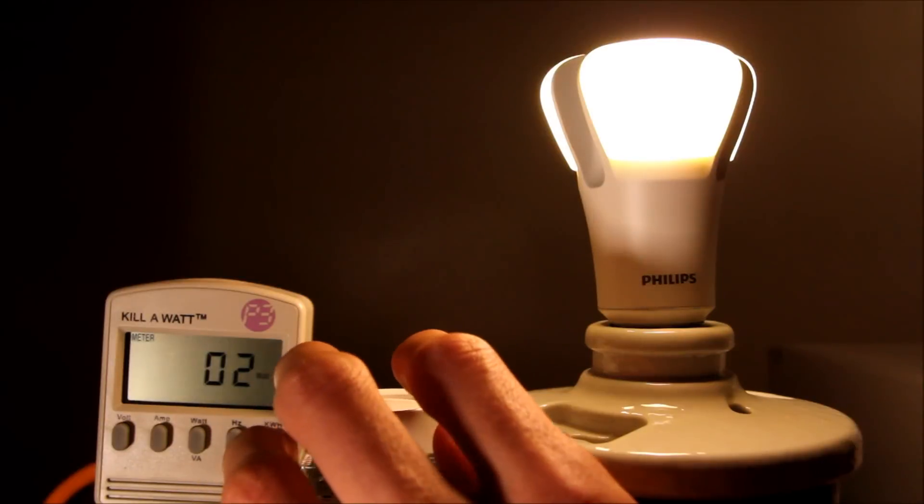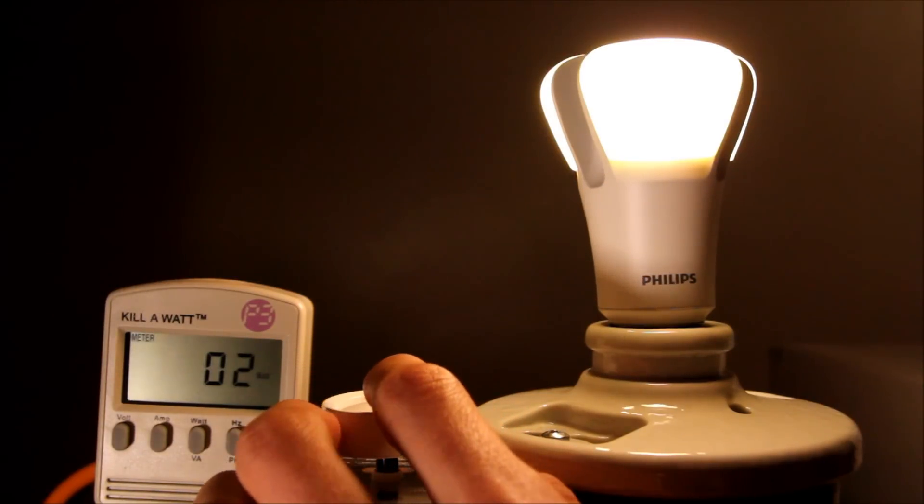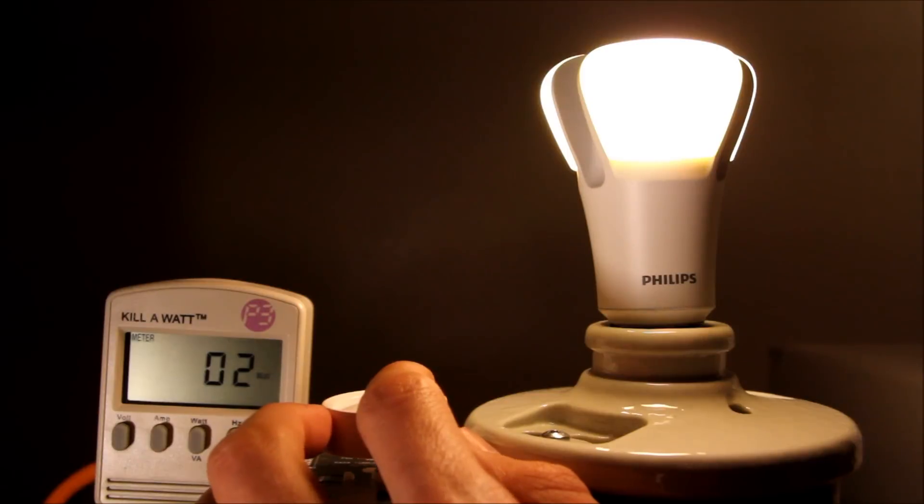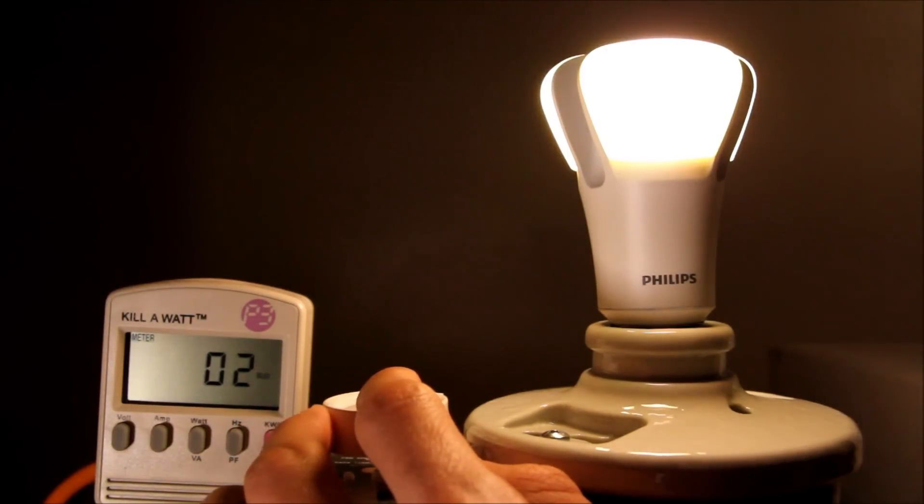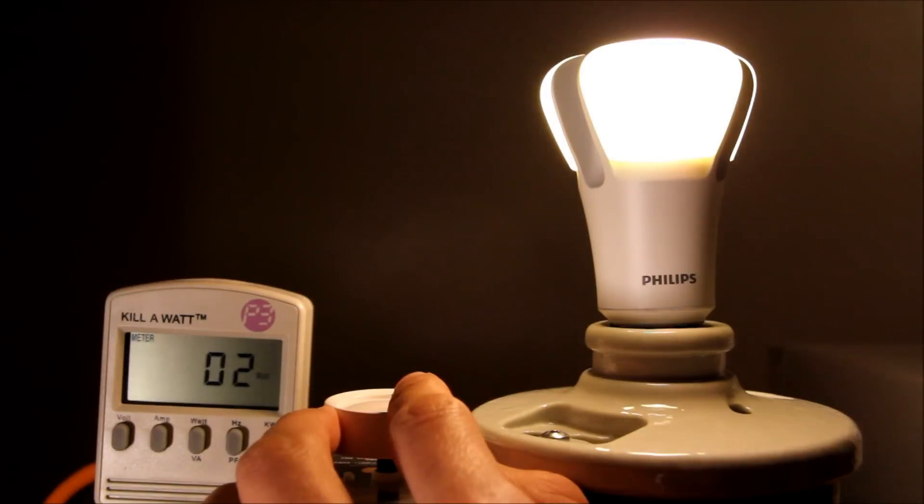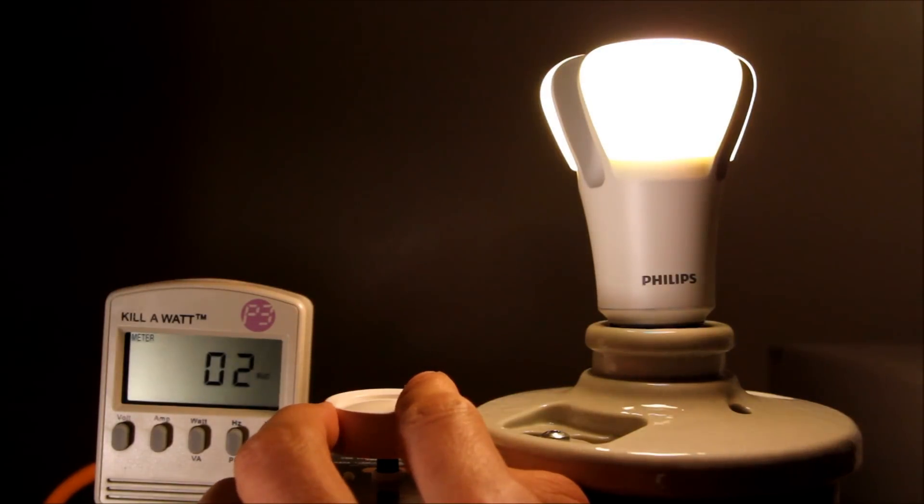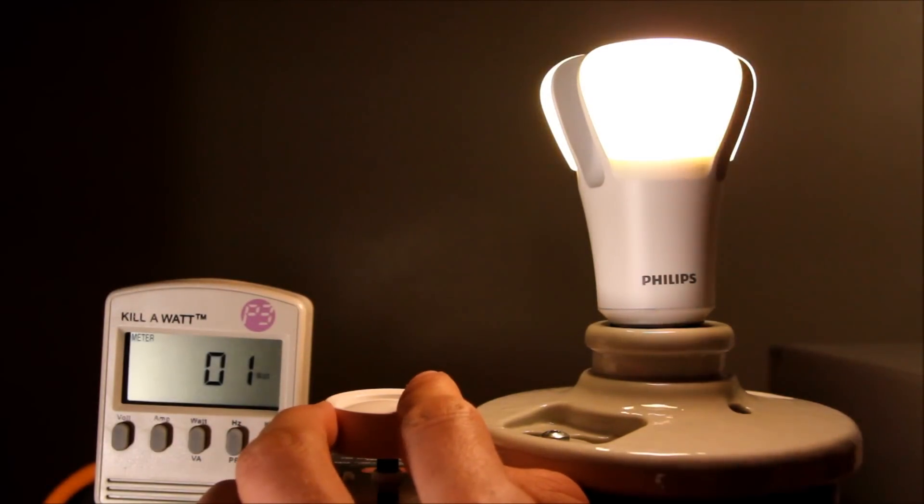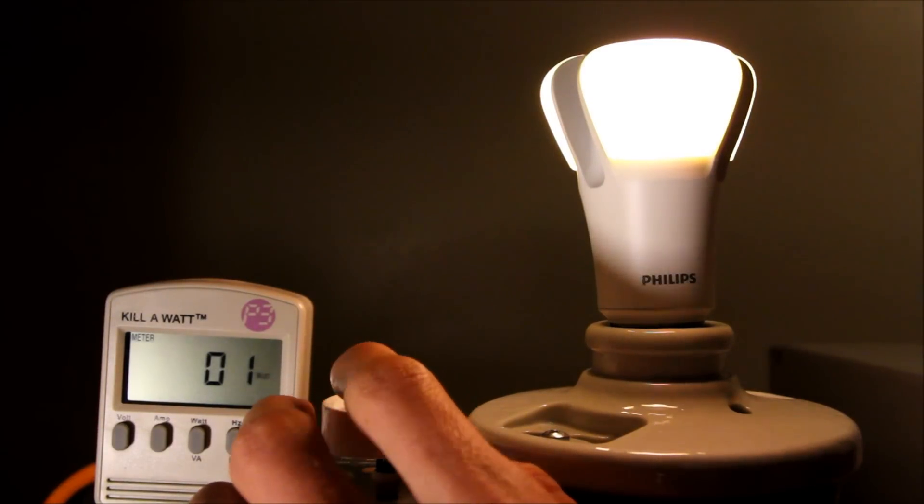Right now I don't even know how to describe the color. It's kind of a yellowish, bluish gray color almost. So it's not that great. It almost has a pink hue to it also from the red LEDs. So really the dimmability of this bulb is not that great.